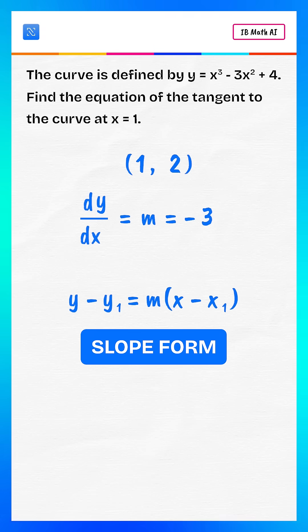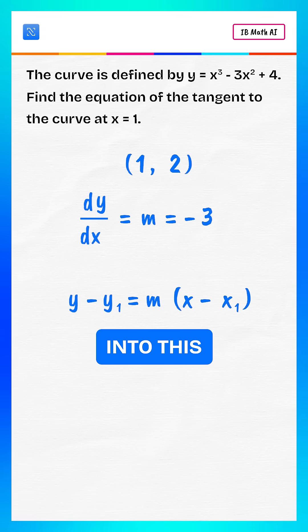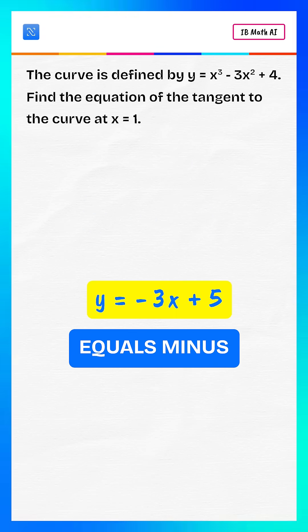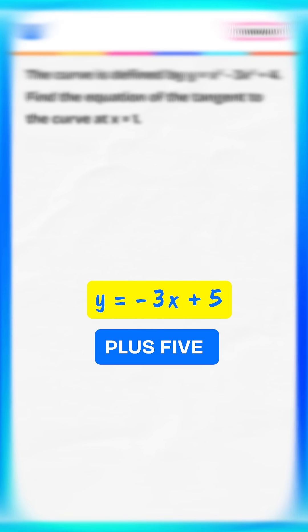Using the point-slope form, now substitute the values into this form. Simplifying, we get y equals minus 3x plus 5.